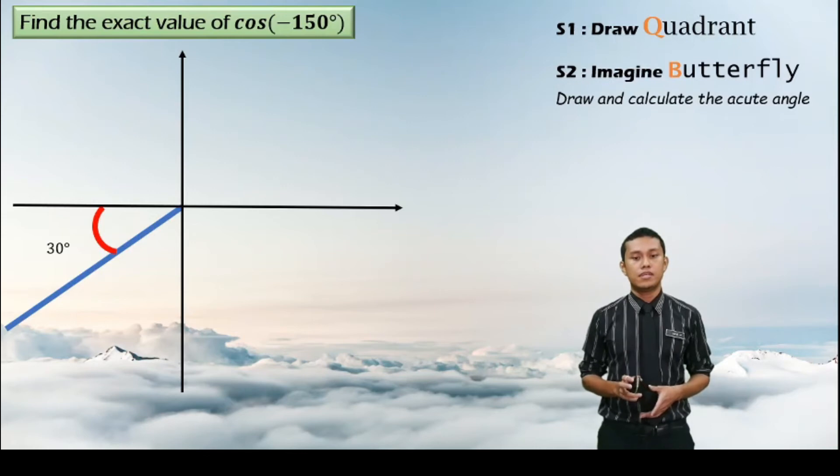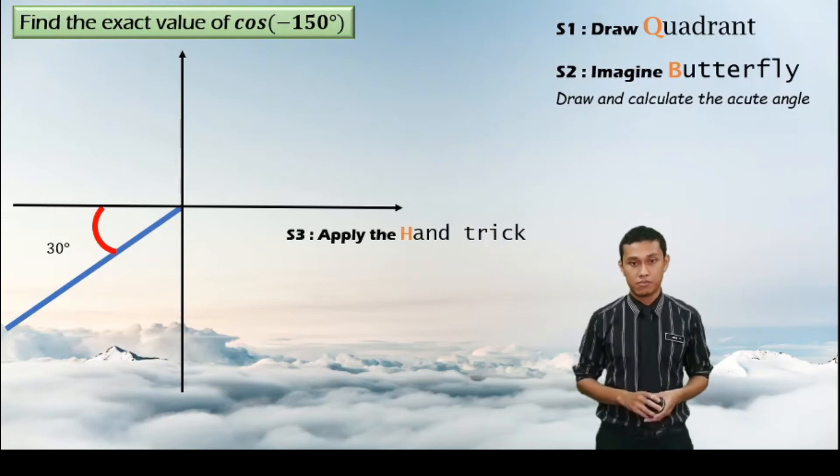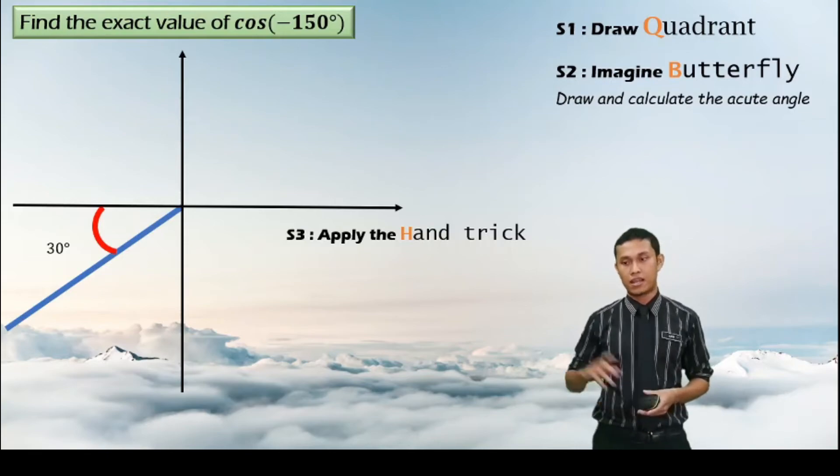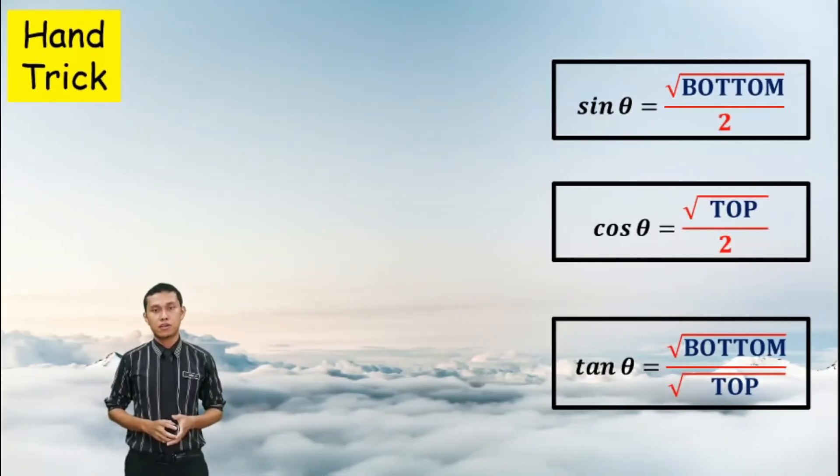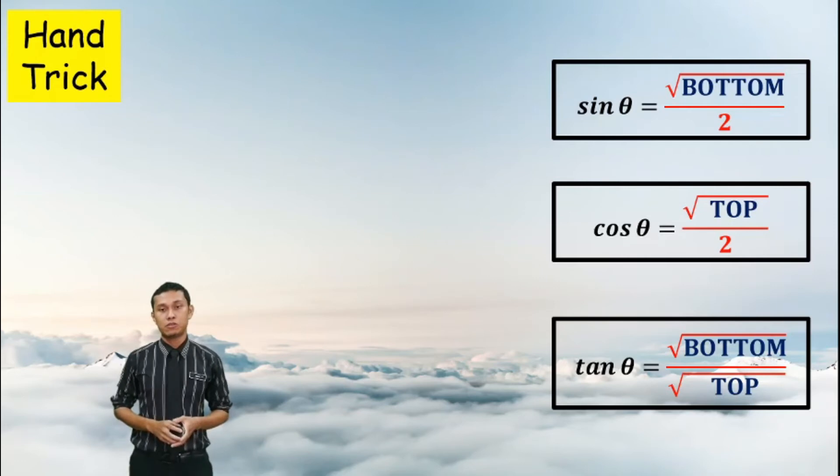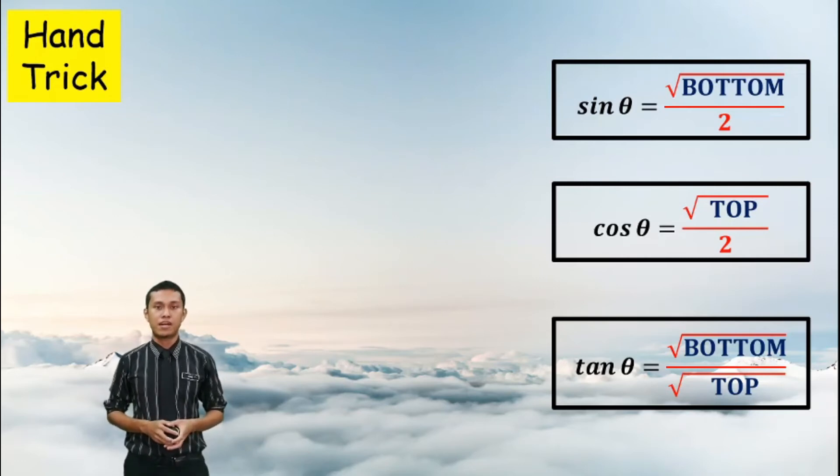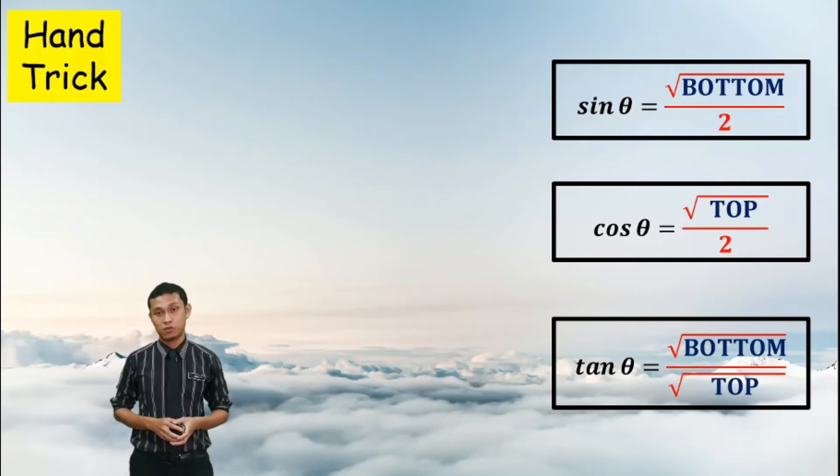The third step is apply the hand trick rule. So you can refer to the video on my left side. Now you want to calculate the value for cos 30 degree. So we will use the hand trick to find this value. But before that, make sure you memorize the formula for hand trick. So the three main formulas are given as follows, as you can see on my right hand side here.